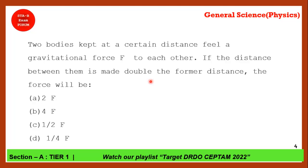Two bodies kept at a certain distance feel a gravitational force F to each other. If the distance between them is made double the former distance, the force will be what? The correct answer is option D — 1/4 of the force. This is because gravitational force F equals G·M1·M2 divided by D squared, so force is inversely proportional to D squared. Doubling the distance makes the force 1/4 of F.